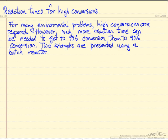In many environmental problems, it's necessary to get high conversion to eliminate a pollutant. The pollutant may be in low concentration, but we still need to react 90 or 99 percent of it. Using kinetics, we'll see that it can take longer — sometimes dramatically longer — to go from 90 to 99 percent conversion than it takes to go from 0 to 90 percent conversion. We'll use a simple batch reactor to do this comparison.